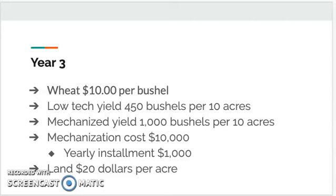Year four: wheat is now $12 per bushel. Everything else remains the same, so make your decisions accordingly. Year five — we've got a slip here. It's now only $6 for a bushel. Make all your decisions accordingly. Remember, you're trying to avoid debt, so if there's a way you can make more money, try and do it.